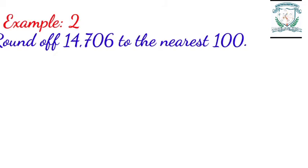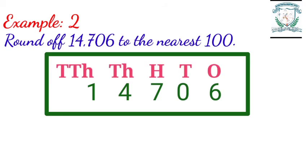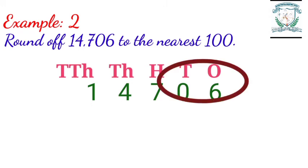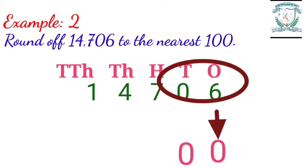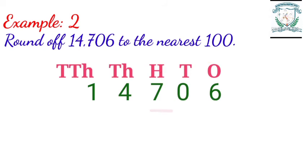Example two: round off 40,706 to the nearest hundred. Step one: arrange the given number in a place value chart. Step two: identify the place to be rounded — in 40,706, the hundreds place should be rounded off to the nearest hundred. Step three: check the digits in the tens and ones places. If the value is less than fifty, the hundreds place digit does not change and the digits in ones and tens places will become zero.